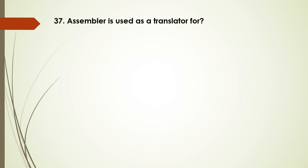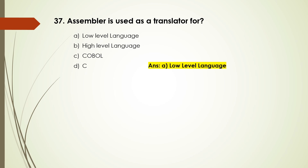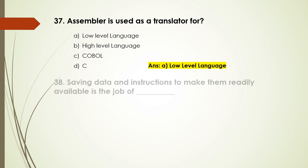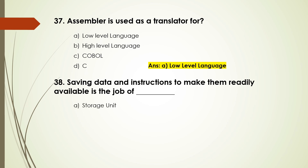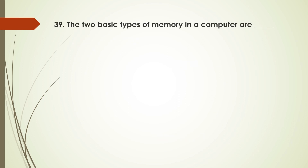Question number 37: Assembler is used as a translator for — options are: low level language, high level language, COBOL, C. The answer is A, low level language. Question number 38: Saving data and instructions to make them readily available is the job of — options are: storage unit, cache unit, input unit, output unit. The answer is A, storage unit.